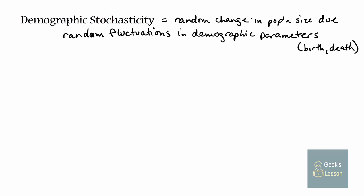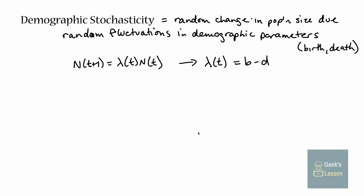Thinking back to the simple stochastic model of exponential growth, n at time t+1 is lambda_t times n at t. Remember that growth rate is really births minus deaths. So if I want to include demographic stochasticity in my model, I can make my birth rate stochastic, my death rate stochastic, or both of them stochastic. If you're simulating a stochastic model like this, every time step you draw your birth rate and/or death rate from some probability distribution, then plug those in and project the population forward in time. If you have a fancier model where growth rate is births minus deaths plus immigration minus emigration, you can make any or all of those stochastic as well.